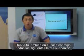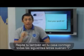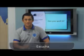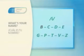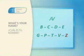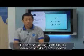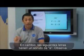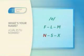Vamos a agrupar las letras por sus sonidos en inglés. Repite en tu casa conmigo. Todas las siguientes letras suenan como la letra I: B, C, V, I, G, P, T, V, Z. En cambio, las siguientes letras tienen un sonido de E: F, L, M, N, S, X.